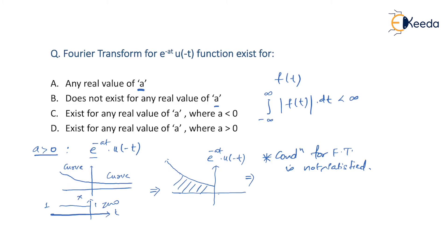Even if the area condition fails, we check if the function is bounded. Since the magnitude tends to infinity, the function e^(-at)·u(-t) is unbounded for a > 0. Because it is unbounded, we cannot use the indirect method either. Therefore the Fourier transform does not exist for a > 0, ruling out option (d) as well.